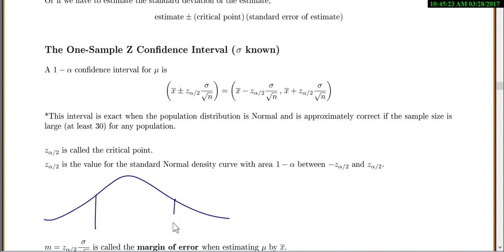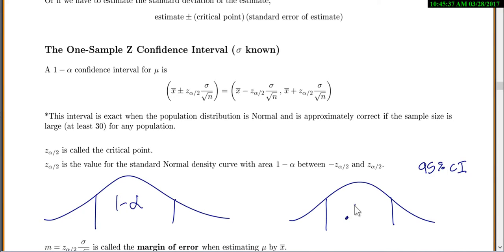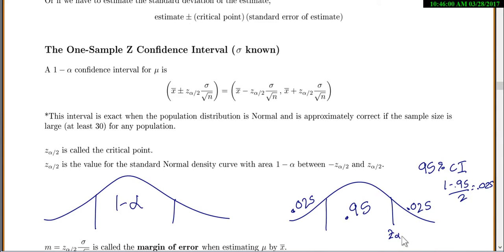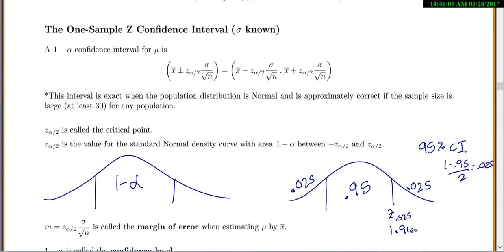To find z-alpha/2, we want 1 minus alpha in the middle — like 95%. For a 95% confidence interval, we want 0.95 in the middle, then (1 minus 0.95) divided by 2 gives 0.025 in each tail. We look up the z value with 0.025 area to the right, which is 1.96. In general, 1 minus alpha goes in the middle, alpha/2 is in each tail, and z-alpha/2 has alpha/2 area to the right. I always draw a picture each time rather than memorizing.